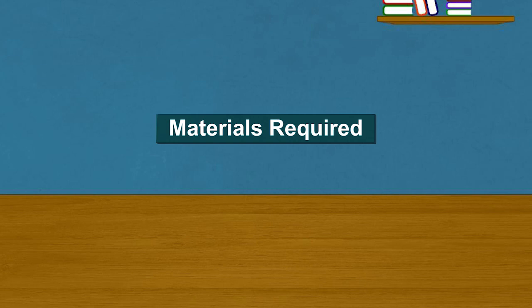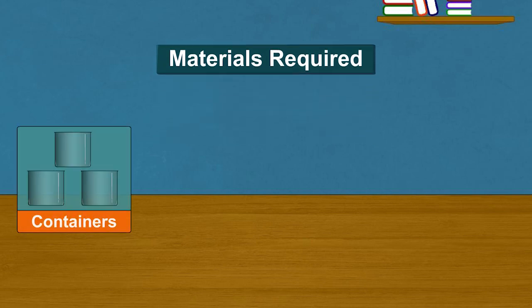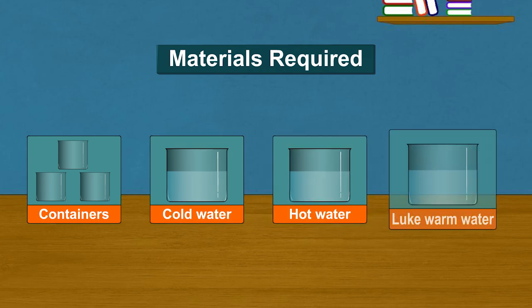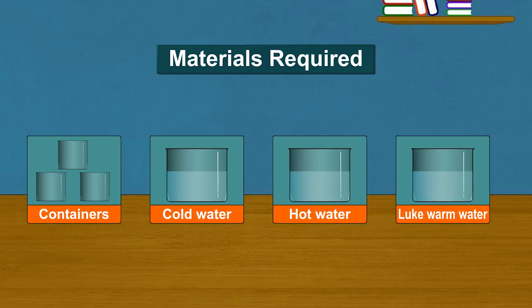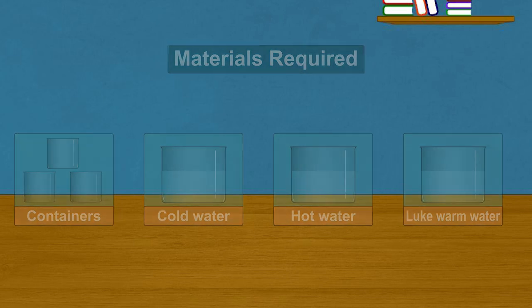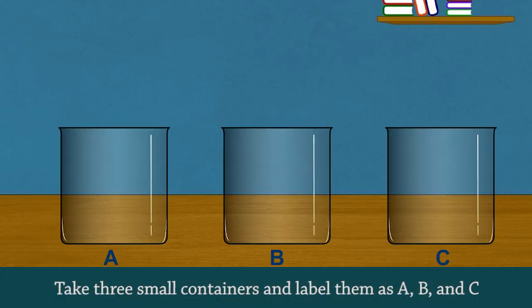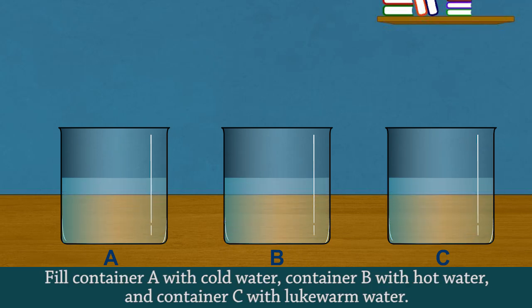Materials required: three small containers or tubes, cold water, hot water, and lukewarm water. Procedure: Take three small containers and label them as A, B and C. Fill container A with cold water, container B with hot water and container C with lukewarm water.